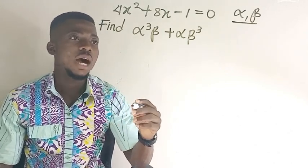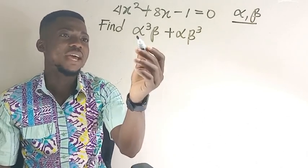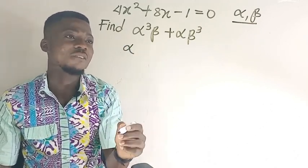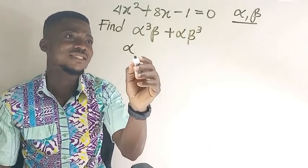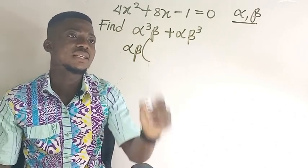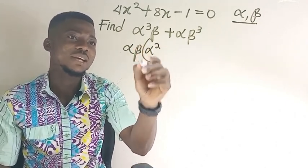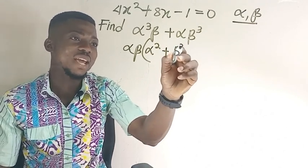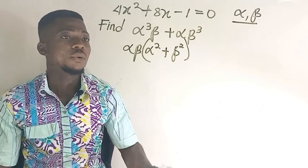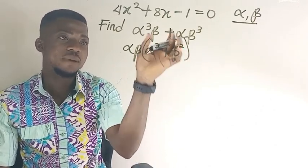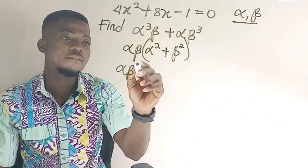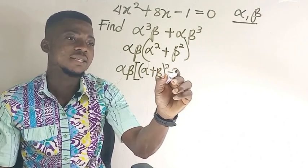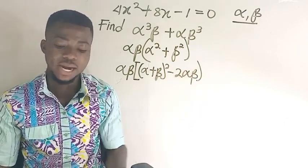How are you going to solve this expression? You factorize it. We have alpha here and alpha here, beta here and beta. So we can factorize alpha and we can factorize beta. Alpha cancels out, giving us alpha squared. Beta cancels out, giving us beta squared. So we have alpha beta in bracket alpha squared plus beta squared. Now we can expand this: alpha squared plus beta squared gives us alpha plus beta all squared minus 2 alpha beta. So that's what we're going to have.